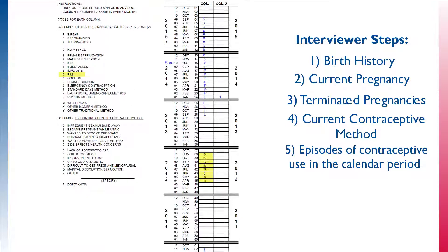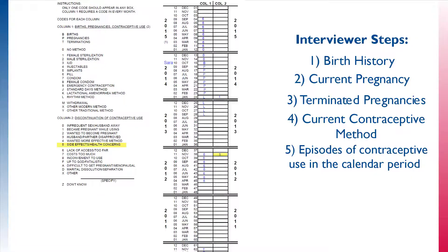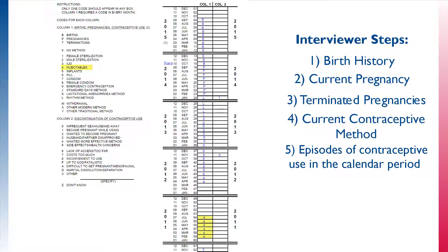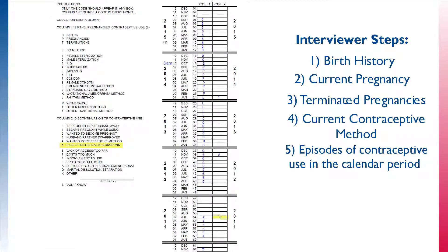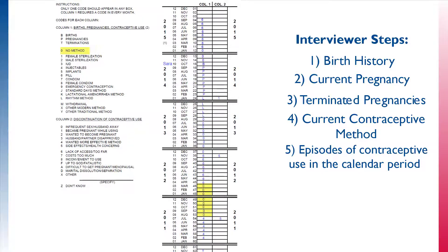The respondent reported that her prior use of a method was in 2012, from April to November. She used the pill, but later discontinued due to health concerns. The interviewer goes back and asks what occurred in the gap between her use of the pill and periodic abstinence. The respondent reports that no method was used in this time period. The interviewer then asks the respondent about the period before she started using the pill in April 2012. The prior episode of use was in 2011, from February to July. The respondent used an injectable and reported discontinuation of this method because of side effects. The interviewer asks about the gap between the two methods and the respondent says no method was used during this gap.